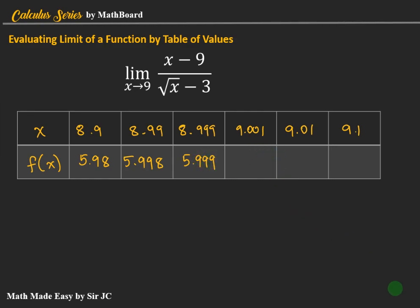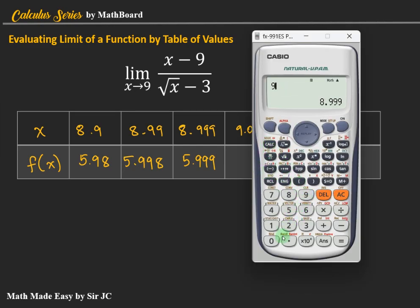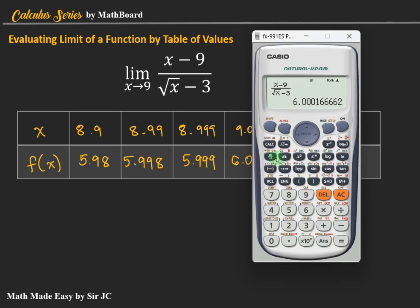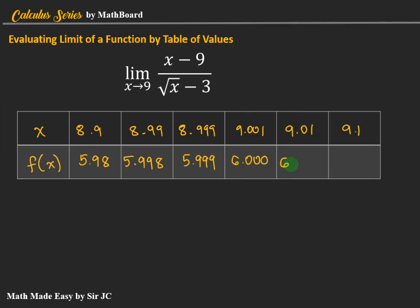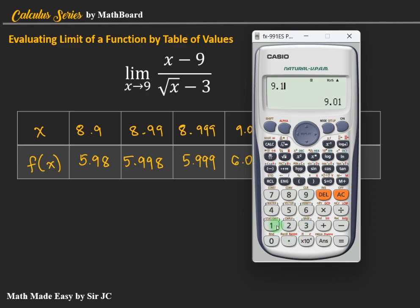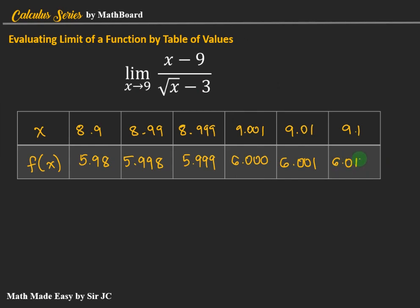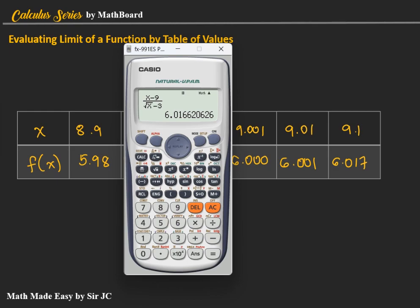So for 9.001, the result is 6.000. Then for 9.01, the result is 6.001. Then lastly, for 9.1, the result is 6.017. We check it again, 6.017.